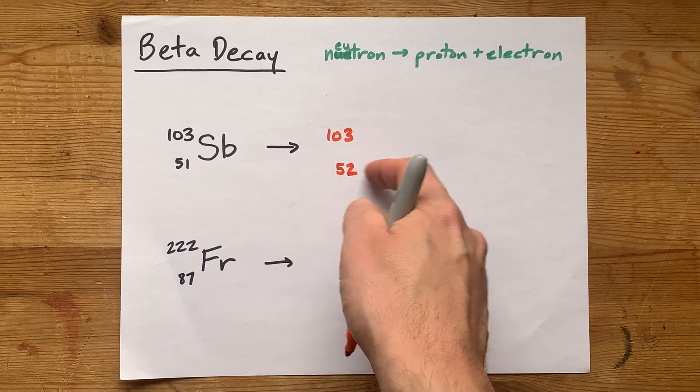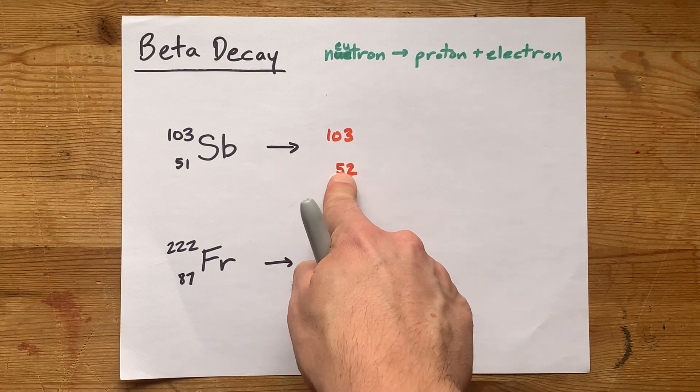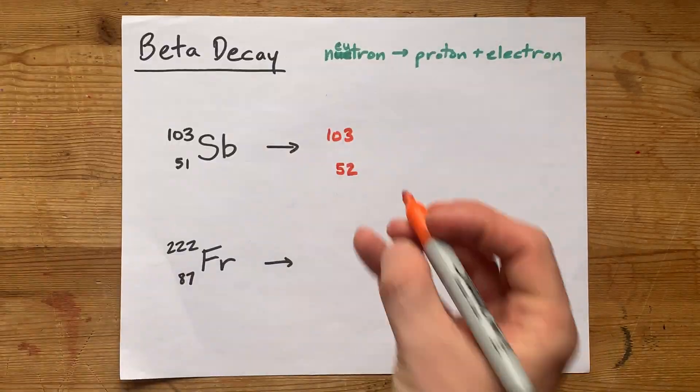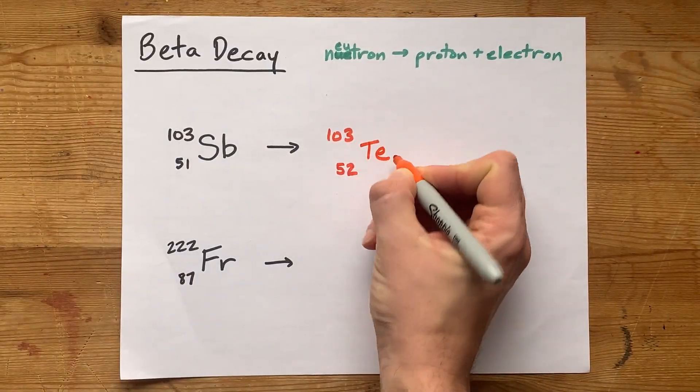The atomic symbol here corresponds to that atomic number. Element number 52 is tellurium. There you go.